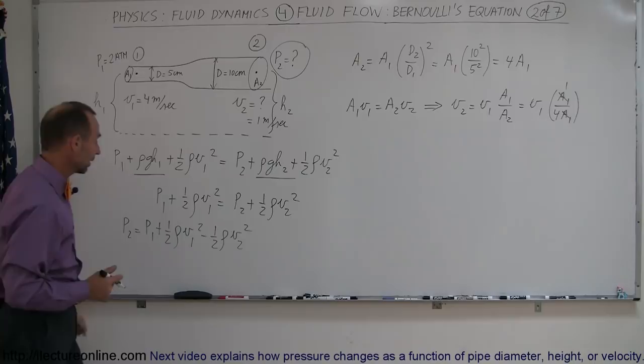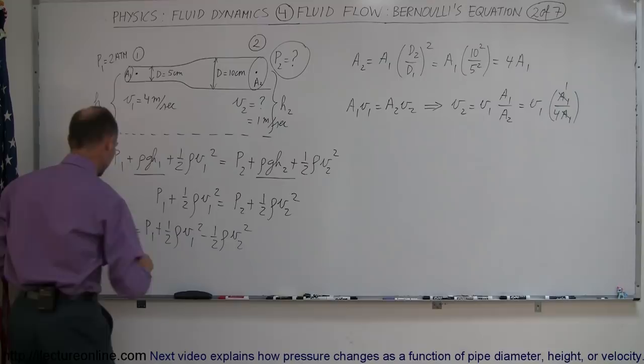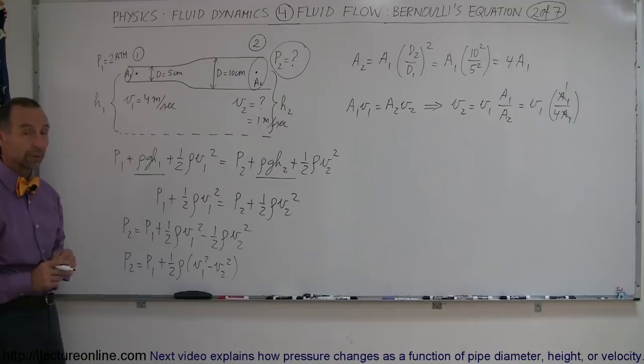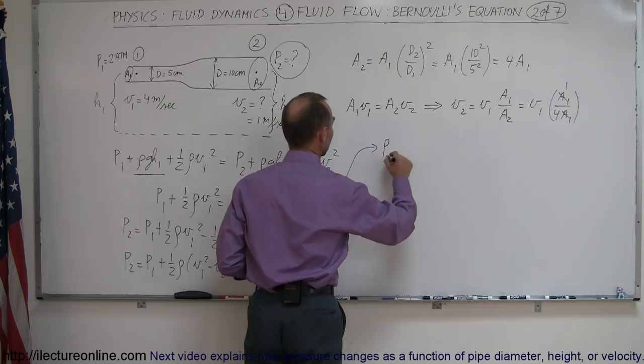First of all, P1 was 2 atmospheres, so we can leave that there. Or before I do that, you know what? I think I'll factor out a 1 half rho. That makes it a little bit easier. So P2 is equal to P1 plus 1 half times rho times V1 squared minus V2 squared. That makes it a little bit easier to work with.